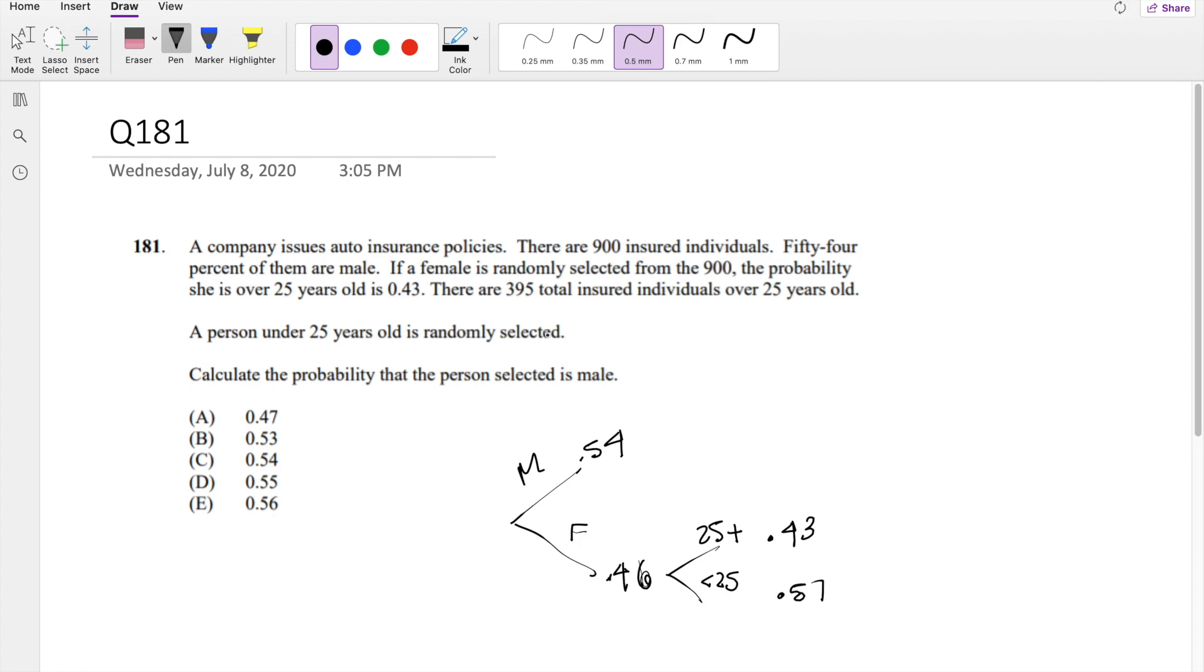There are 395 total insured individuals who are over 25. So 25 plus in general is 395 divided by 900, which is equal to 0.4388.